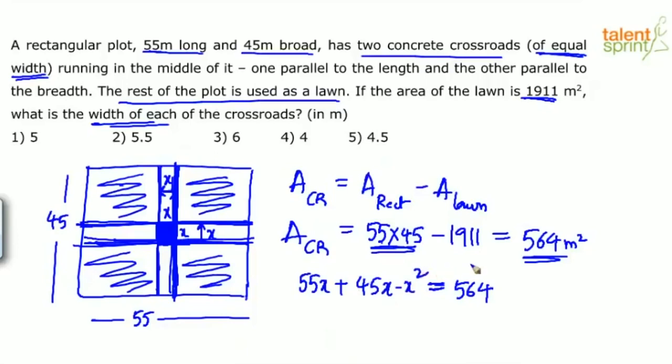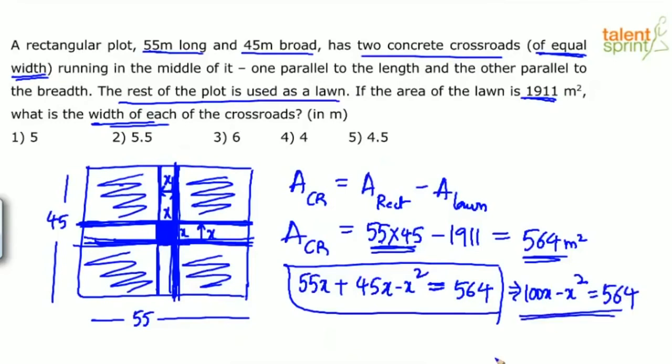Now this is balanced and x is the width, so one equation, one unknown, you can solve and get the answer. 55x is the horizontal crossroads, 45x is the vertical crossroads, but by adding these two areas, you get the common area being counted twice, you have to remove that. So x square has to be subtracted. So basically, 100x minus x square is 564. Now this is a quadratic equation which you can simplify, find out the two values of x.